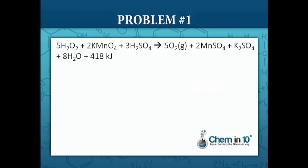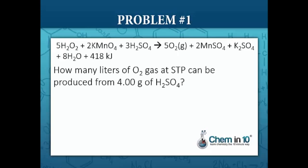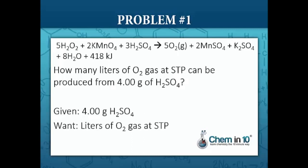Let's start with this equation. Five moles of hydrogen peroxide reacting with two moles of potassium permanganate plus sulfuric acid to produce five moles of oxygen gas, two moles of manganese sulfate, one mole of potassium sulfate, and eight moles of water plus 418 kilojoules of energy. This is an exothermic reaction — it's giving off energy. The question is: how many liters of oxygen gas at STP can be produced from four grams of sulfuric acid?